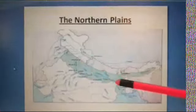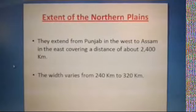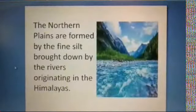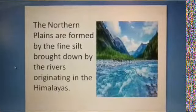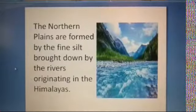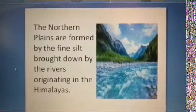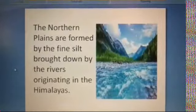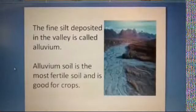The width is 240 to 300 kilometers wide. The states in the Northern Plains are Punjab, Haryana, Uttar Pradesh, Bihar, West Bengal and parts of Assam. A lot of rivers originate from the Himalayas; as they flow down to the plain area, they bring along sand and silt at the banks of the rivers, and these plains are formed.